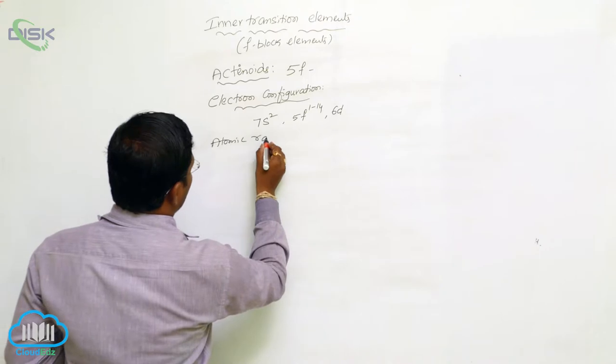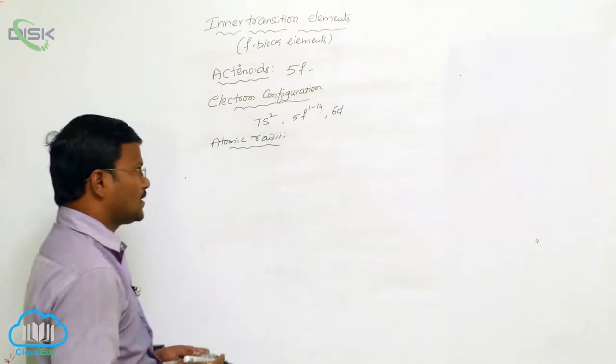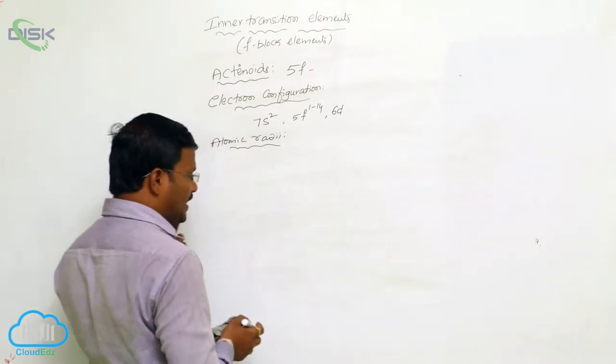And for atomic radii, the explanation for actinides is similar to lanthanides. The atomic radii decreases